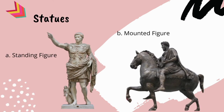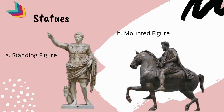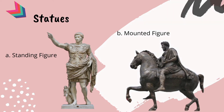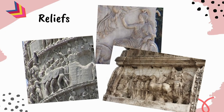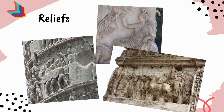Two types of Roman statues may be identified: the standing figure and the mounted figure. Roman emperors would often have many statues made in their honor and placed around the city, using them to commemorate their victories and remind the people who was in power.